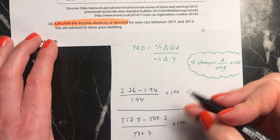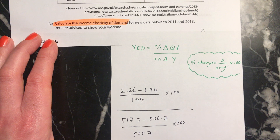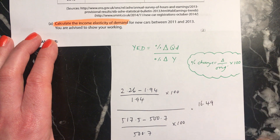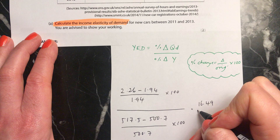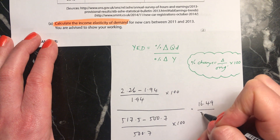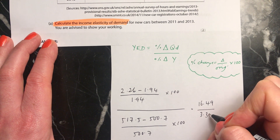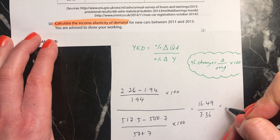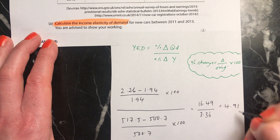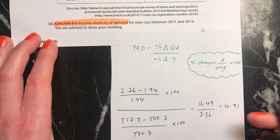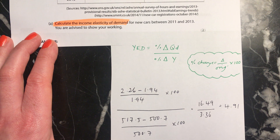When you work out the top line, you'll get 16.49. The bottom line will work out as 3.36. And when you divide those, it's 4.91. Remember to give your answer to two decimal places, and it's not a percentage.